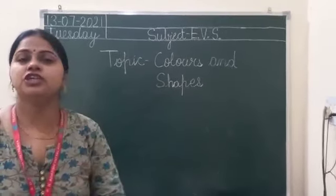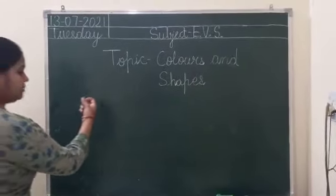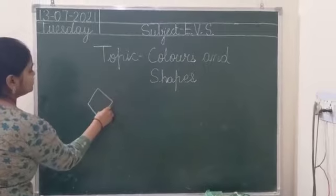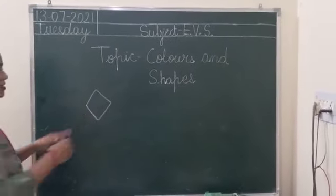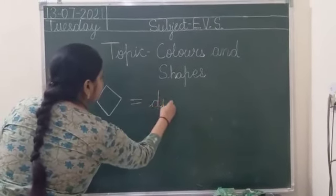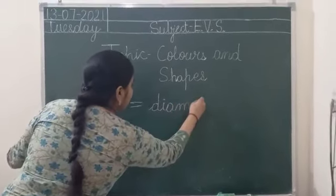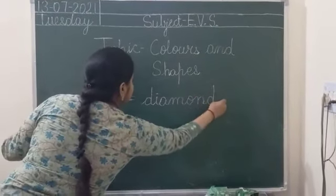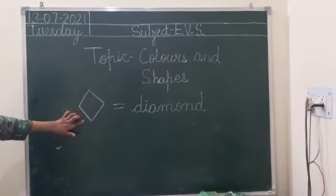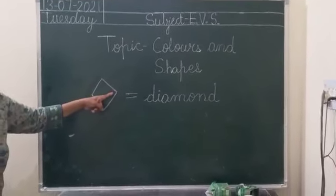We have done 3 shapes. How many shapes have we done? We have done 3 shapes. Tell me, which shape is this? Diamond shape. Let's read the spelling: D-I-A-M-O-N-D. Diamond shape has 4 sides — 1, 2, 3 and 4 — and 4 corners.